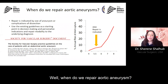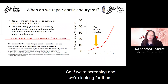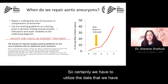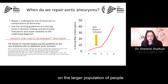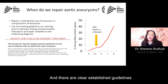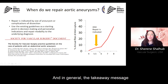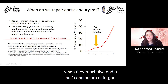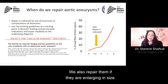When do we repair aortic aneurysms? If we are screening and finding them, we plan repair when necessary. We utilize established guidelines based on the larger population of people with aortic aneurysms. In general, we repair abdominal aortic aneurysms when they reach five and a half centimeters or larger, or if they are enlarging in size.